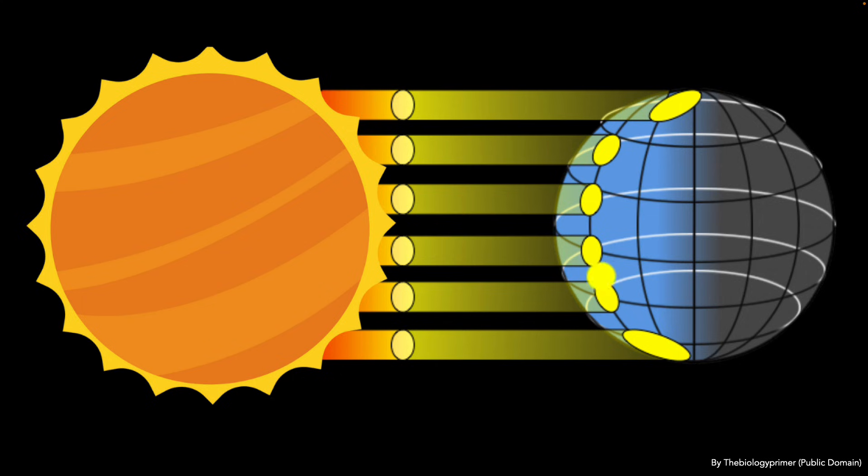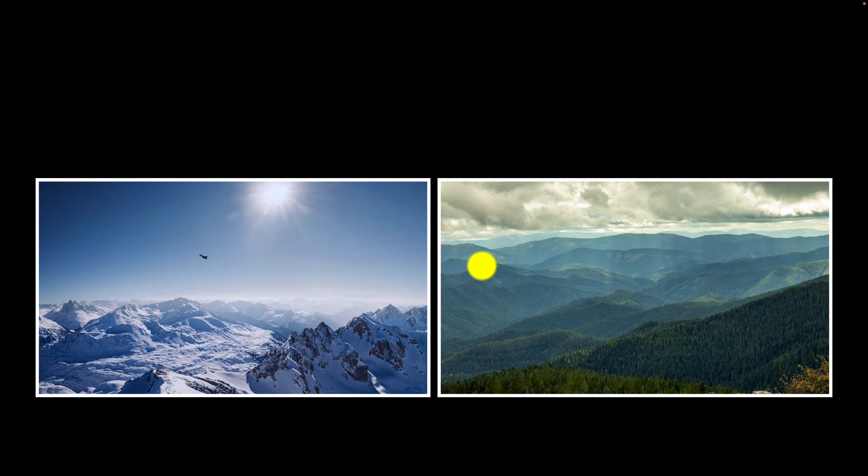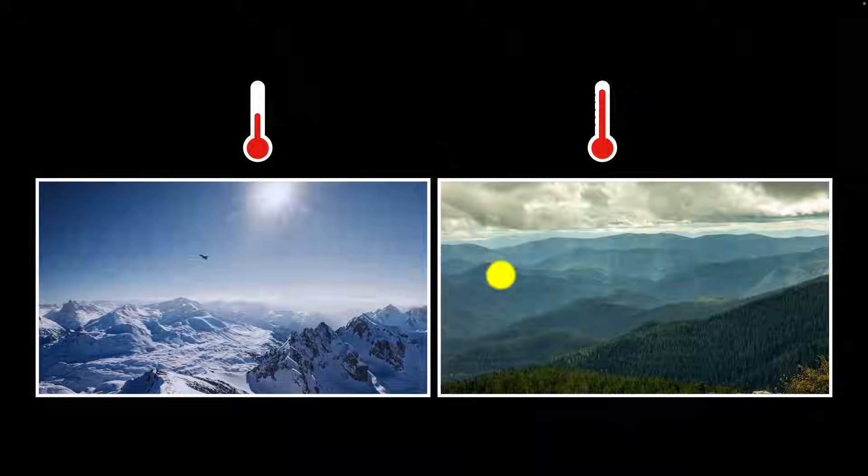So the result is that the equator heats up more than the poles. Even different surfaces absorb heat differently. For example, dark surfaces absorb more energy than the light ones. So the result of all of this is that it creates temperature differences. But what does that do?